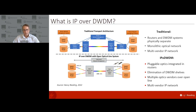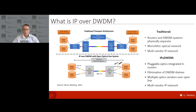With IP over DWDM, what operators are doing is taking those terminals — those transponder shells — and removing them from the network, integrating the optics directly into the switch and router. It's the elimination of the DWDM shells. It requires pluggable optics, and really what we're seeing is a resurgence in the trend due to the advent of the 400ZR and ZR Plus pluggable optics.